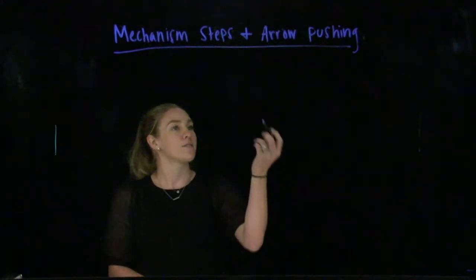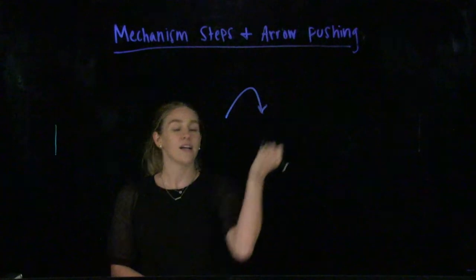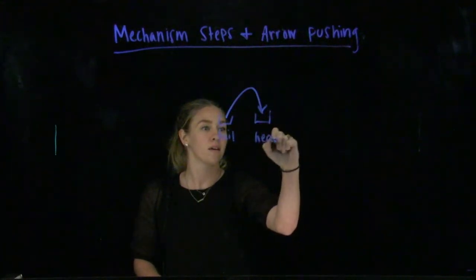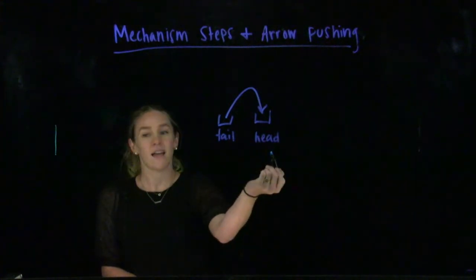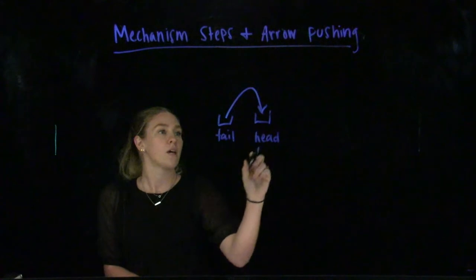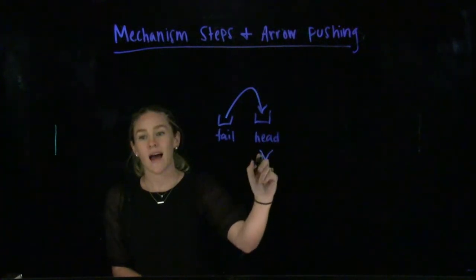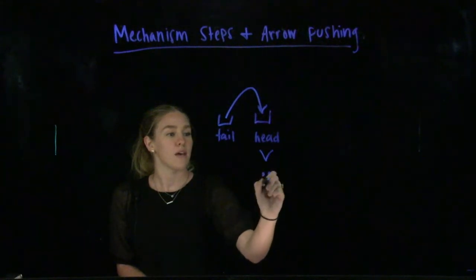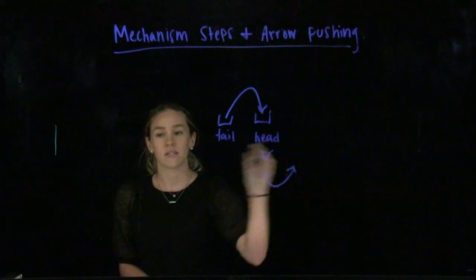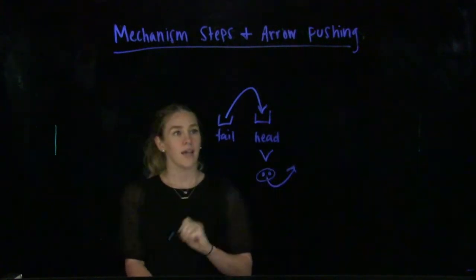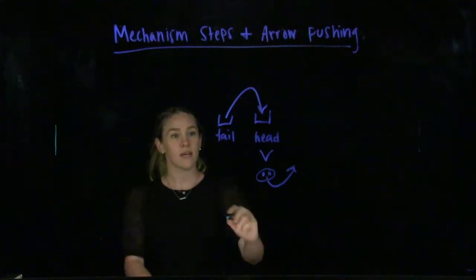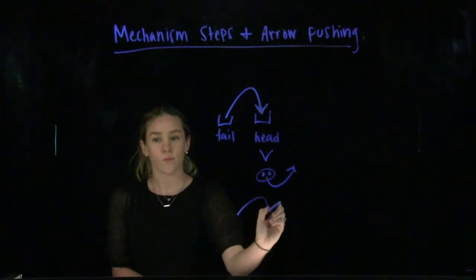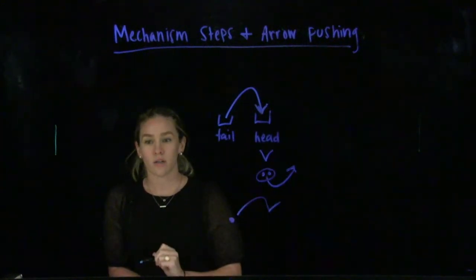A curved arrow has two components: it has a tail and then it has the head. The important part is that the head tells you how many electrons we are pushing with this arrow. In this case, our head is double barbed — it has two little lines, showing the movement of two electrons. In later chapters, you will learn about a single barbed arrow, which has one line and shows the movement of a radical electron, or one electron.